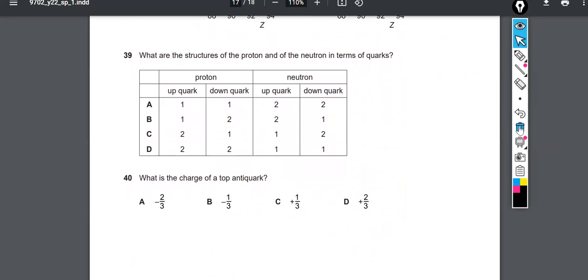What are the structures of the proton and the neutron in terms of quarks? So a learning objective that says use a simple quark model to describe protons and neutrons. A proton is up, up, down. A neutron is down, down, up. So we have a proton that has two up quarks and one down quark. So that's good here. And the neutron has one up and two down. So that's good there. So only choice C has that correct, just knowing your quark structure.